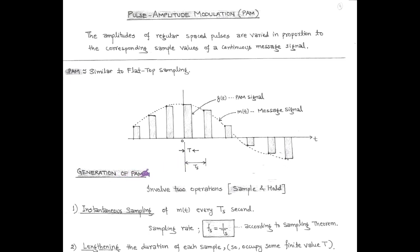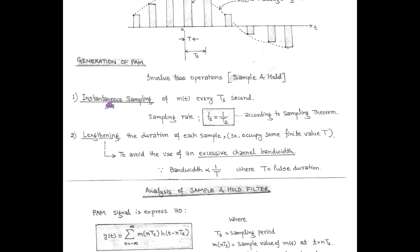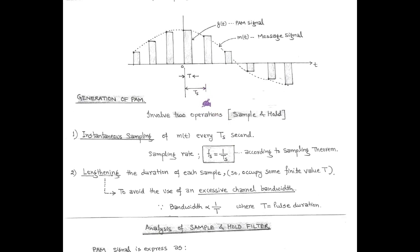For the generation of a PAM signal, two operations are involved: sample and hold operations. These involve instantaneous sampling of the modulating signal and lengthening the duration of each sample or pulse. For instantaneous sampling of the message signal, there is a criteria of sampling with sampling rate F_S, which is the sampling frequency equal to 1 over T_S, where T_S is the sampling period. According to the sampling theorem, F_S must be greater than or equal to twice F_M for recovery of the original baseband signal. To avoid excess use of channel bandwidth, we can increase the duration or width of each pulse.